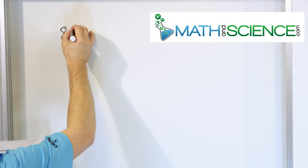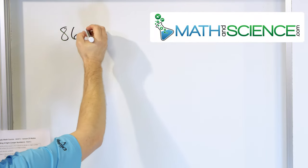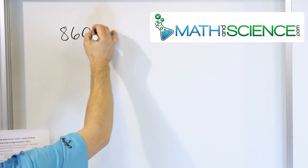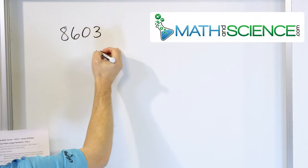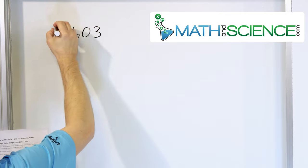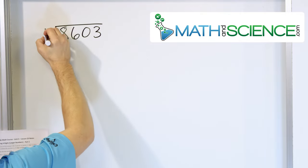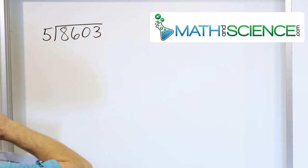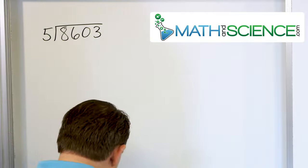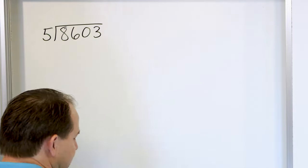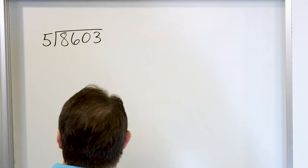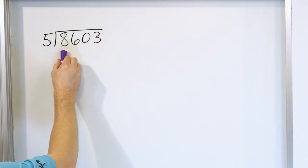Let's say it's 8,603, and we're going to divide this number by 5. The first thing you do always is you take a look at the first number.